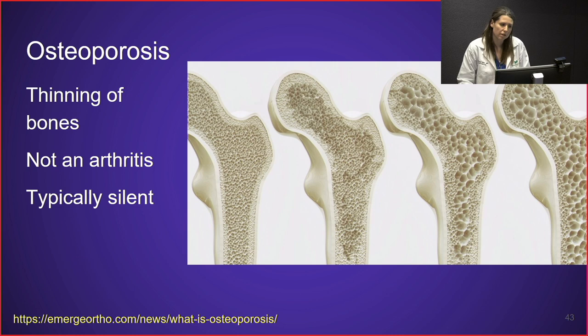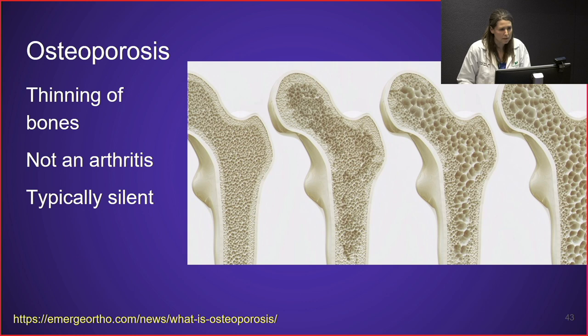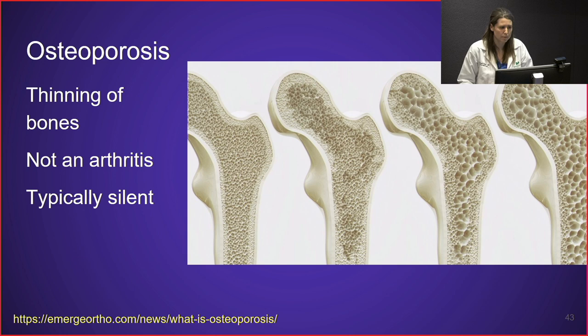Osteoporosis is often confused with osteoarthritis. Osteoarthritis is arthritis of the joint, whereas osteoporosis is a thinning of the bones — not an arthritis — and the joint itself tends to be spared. Like osteoarthritis, it develops with age, as spaces within the bone become larger, making it more brittle and increasing fracture risk. Most people don't know they have osteoporosis until they break something. If concerned, talk to your doctor about screening.